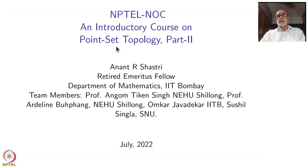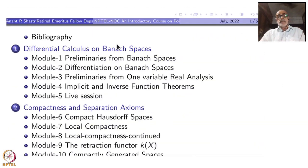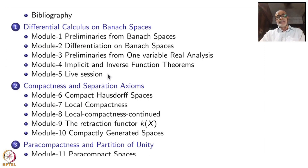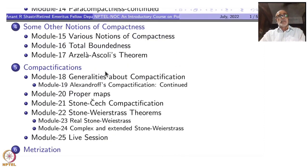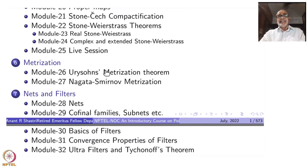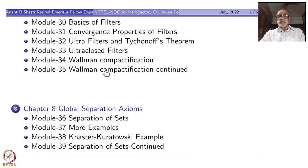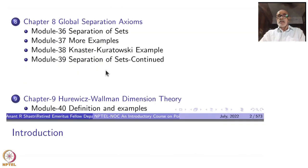As the name suggests, this is Part 2 of the point set topology course. Point set topology Part 1 was also an NPTEL NOC course introduced last semester. You can have a look at the content page and bibliography here. The chapters include: differential calculus on Banach spaces, compactness and separation axioms, paracompactness and partition of unity, other notions of compactness, compactification, metrization, nets and filters, global separation axioms, Hurewicz-Wallman dimension theory, and the very important chapter on manifolds.